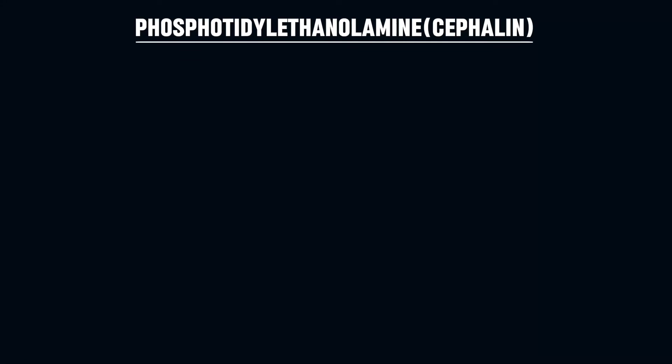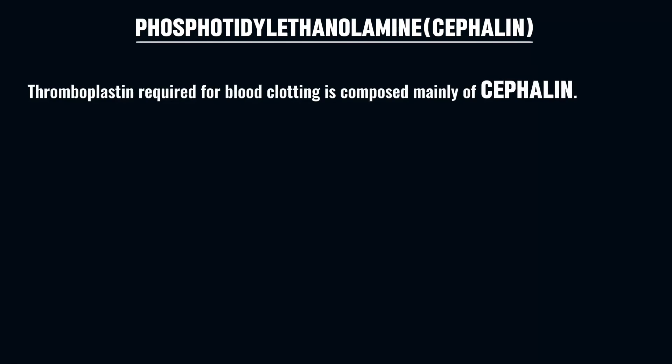The second type of glycerophospholipid with a nitrogenous base is cephalin, also known as phosphatidylethanolamine. Thromboplastin, which is required for the blood clotting process, is composed mainly of cephalin.